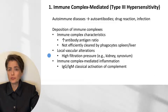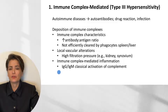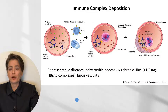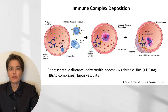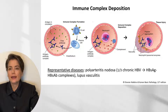Once we get the deposition, we get binding of complement, which results in injury to the cells through IgG and IgM classical activation of complement. Looking at a figure from Robbins and Kumar Basic Pathology: antigen is in circulation and antibodies form antigen-antibody complexes, which deposit in the endothelial wall and complement binds. This leads to recruitment of neutrophils that begin injuring these cells, and we can also get platelet aggregation.